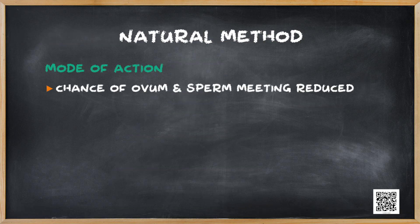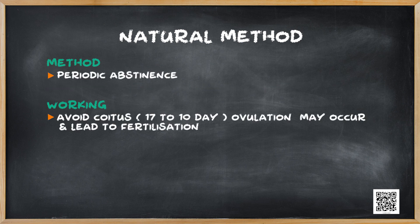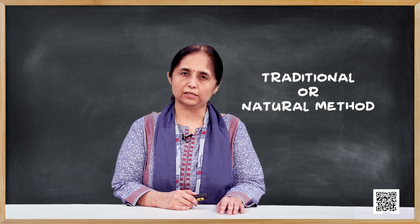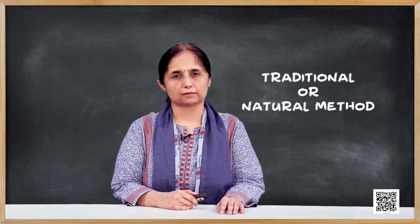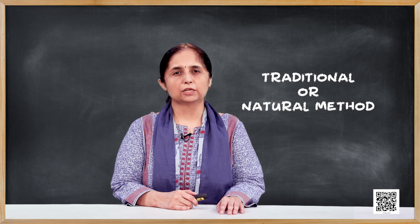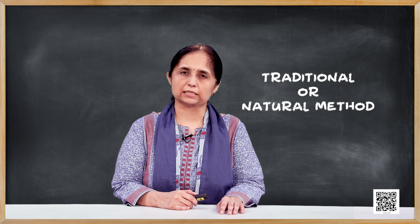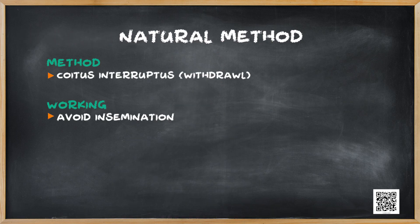Let us first talk about the natural or traditional methods of contraception. They principally work by avoiding chances of meeting between ovum and sperms. Periodic abstinence is one such method in which couples avoid or abstain from coitus from day 10 to 17 of the menstrual cycle, when ovulation would be expected. The chances of fertilisation are very high during this period — it is in fact called the fertile period.